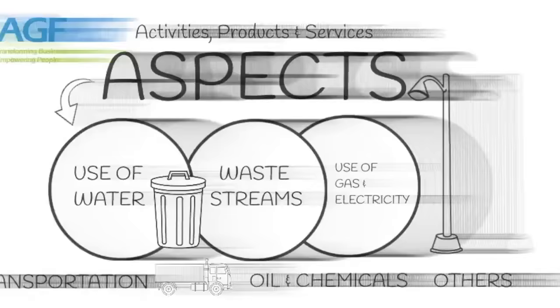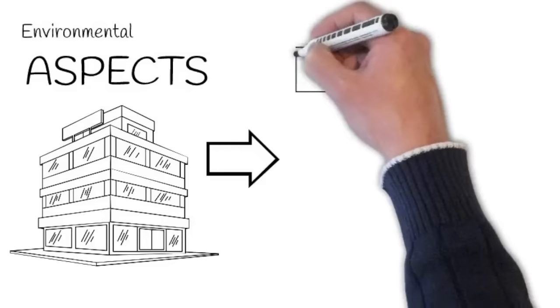These can then be split into subcategories — for example, electricity can be broken down into air conditioners, lighting, compressors, equipment, and others.